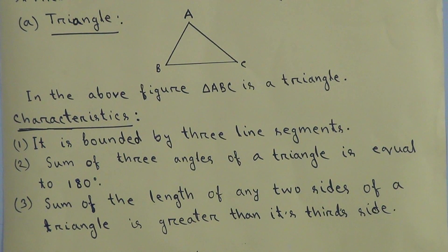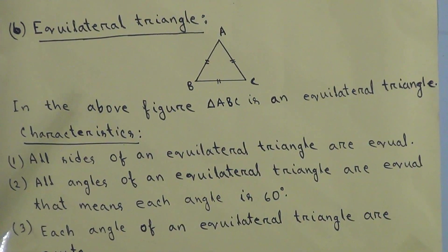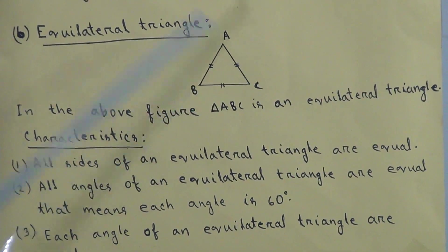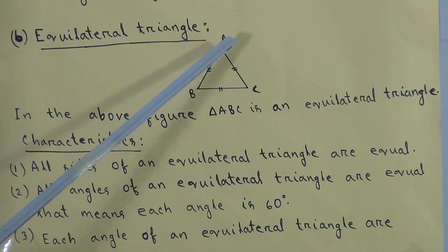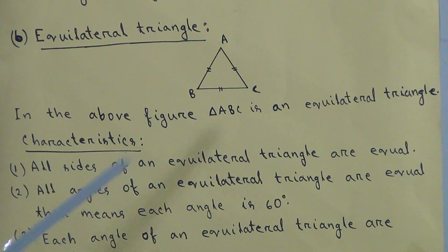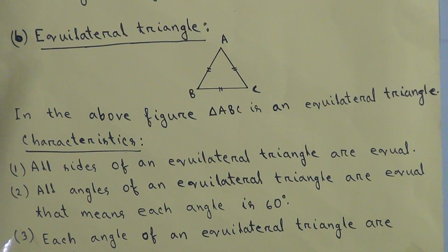Now we will draw a figure of an equilateral triangle, then write its characteristics. In the above figure, ABC is an equilateral triangle. We call it an equilateral triangle because the sides AB, AC, and BC are all equal. Since the length of AB, AC, and BC is equal, we say ABC is an equilateral triangle.